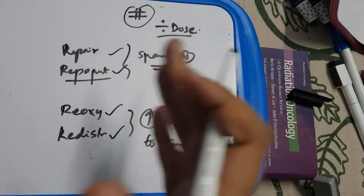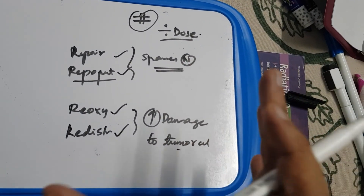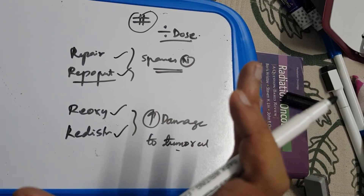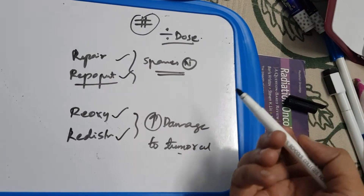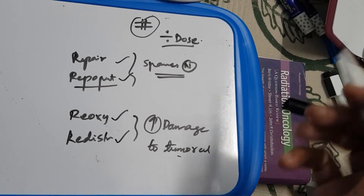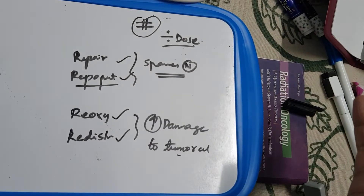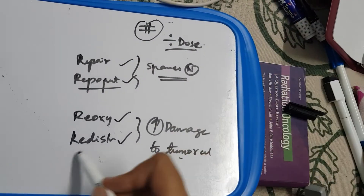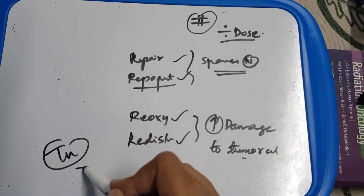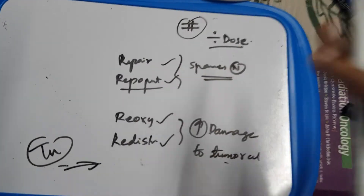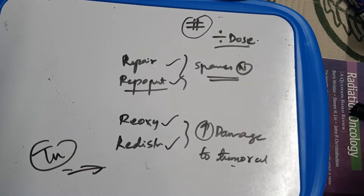If you prolong the treatment excessively, the advantage is reduced early reactions in normal cells, but the downside is that the surviving tumor cells also survive longer and proliferate. So you have to balance all of these factors carefully.